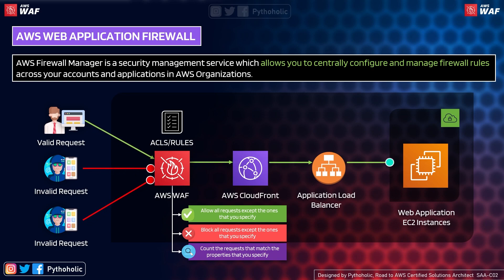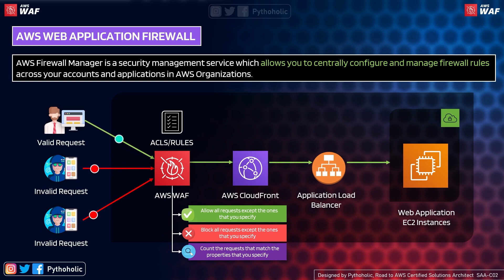The second behavior is 'block all requests except the ones that you specify.' This is more like allowing only people who have access — for example, specific CIDR block IP ranges can be allowed so only those IPs have access to the website. Everything else is blocked. So if you've specified something, only that will be allowed — unlike the first condition where all requests are allowed except the ones you specify.